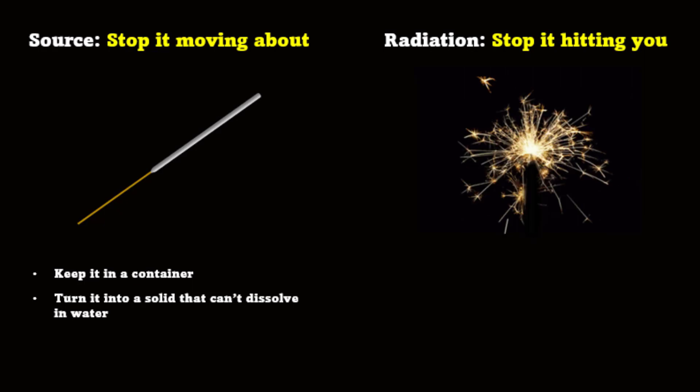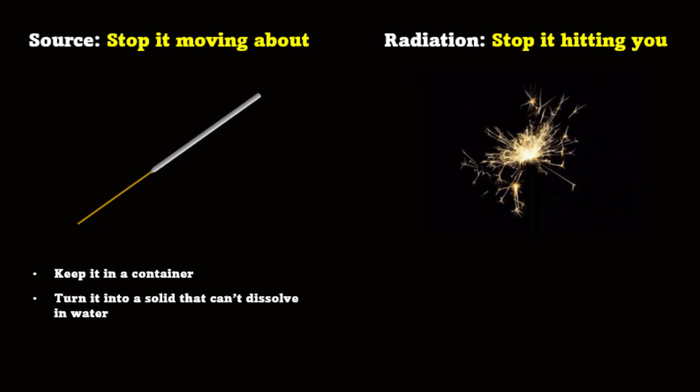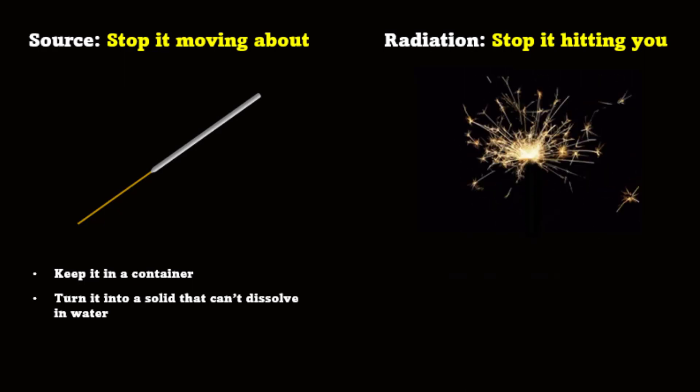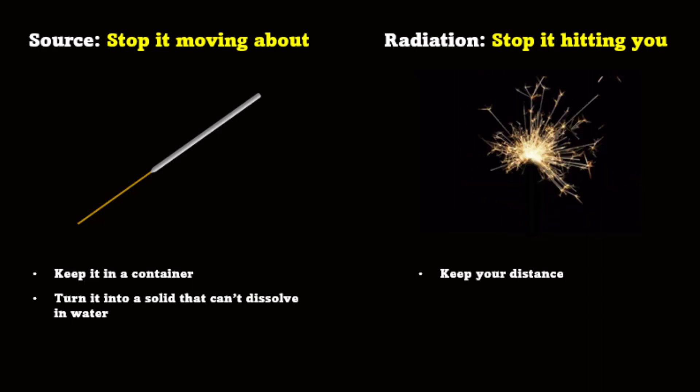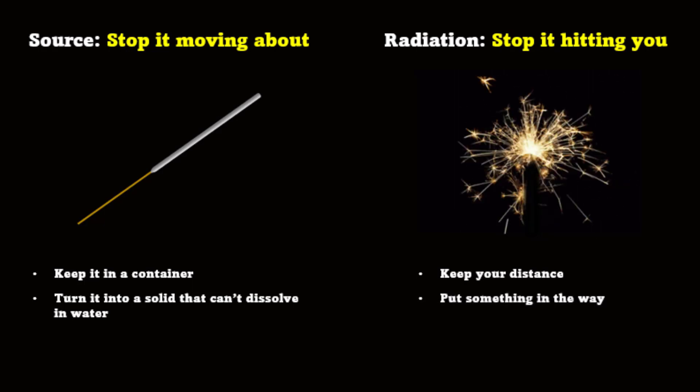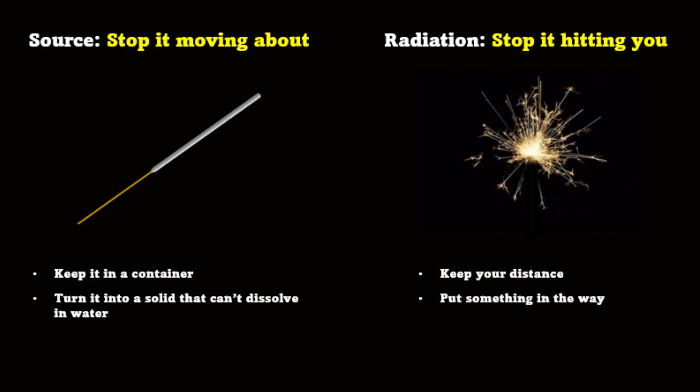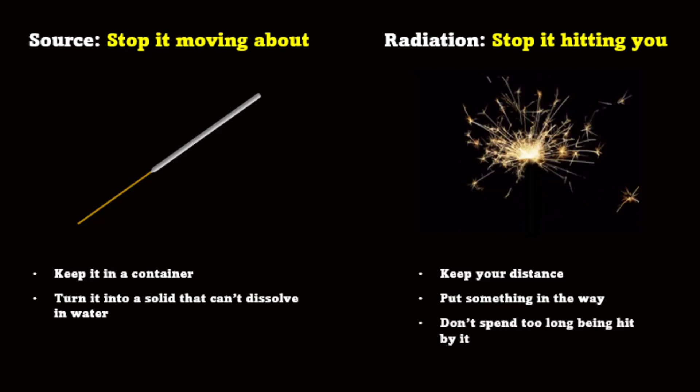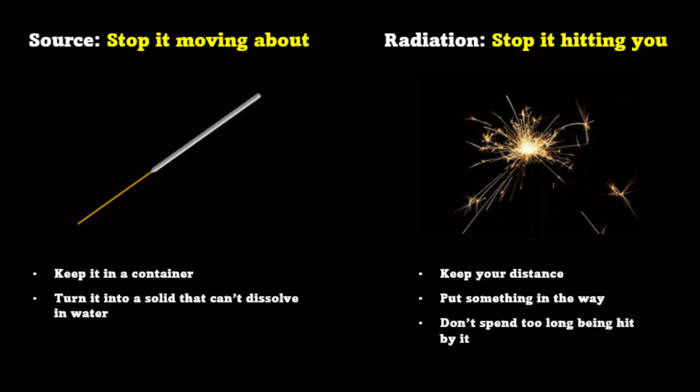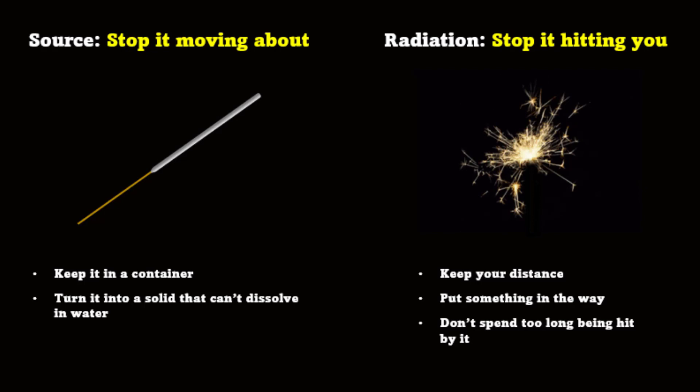To reduce the hazard from the radiation, you want to reduce how much hits you. You can normally do this pretty easily by keeping your distance, putting something in the way, this is called shielding, and reducing your exposure time. We'll find out more about dangers and risks in Lesson 7.